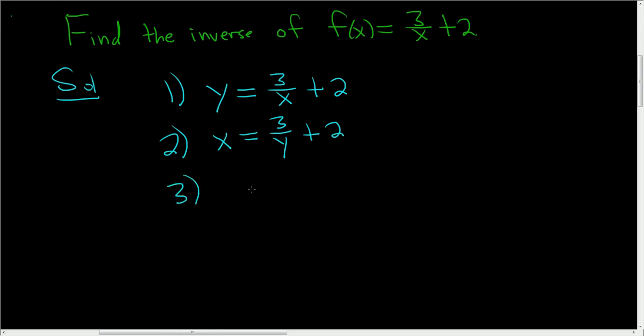Step 3: We want to solve this for y. So to do that, we'll first subtract 2 from both sides. So we end up with x minus 2 equals 3 over y.